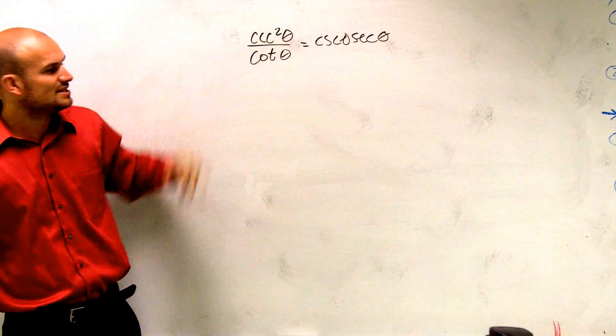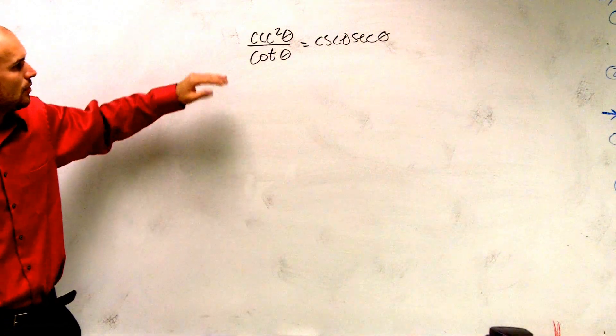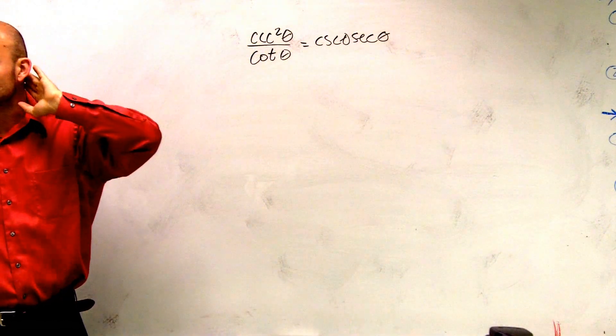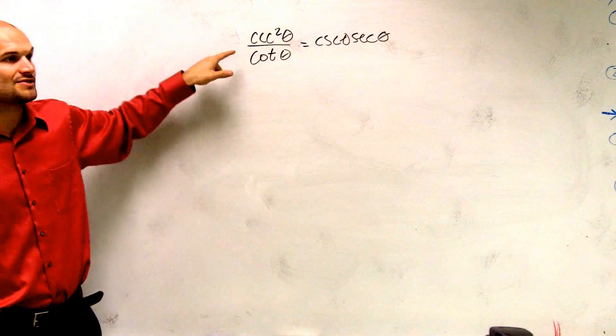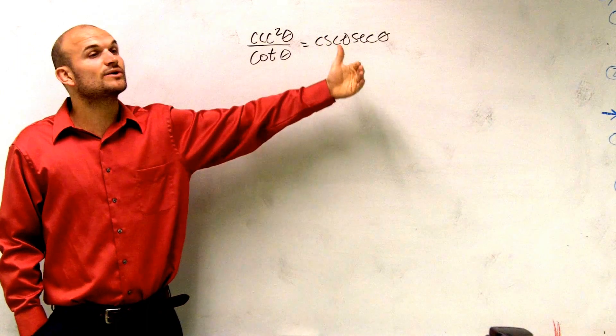So dealing with the fraction, I have the cosecant squared of theta. One thing we could look at would be transferring this to a trig identity, right? But the main important thing I also want to do is this is a fraction, and this isn't a fraction. So let's get rid of our fraction.